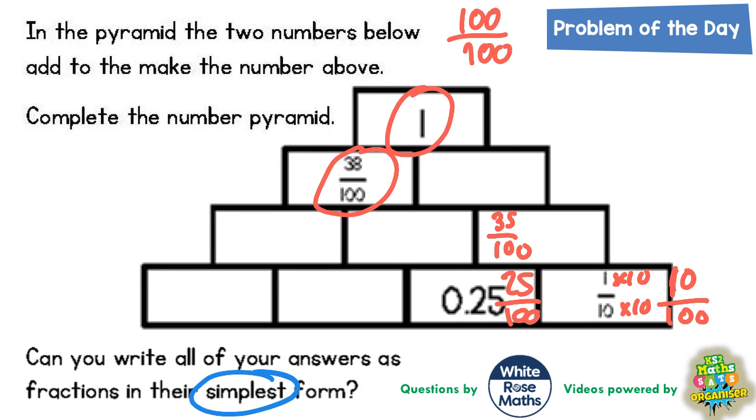To get this one here 38 one hundredths up to a whole one which is 100 hundredths would be 62 one hundredths. We'll worry about simplifying these later once we've got an answer in every box. Now we're trying to make 62 one hundredths and we've already got 35. Well if you take 35 off 62 you're left with 27. So this one would be 27 one hundredths.